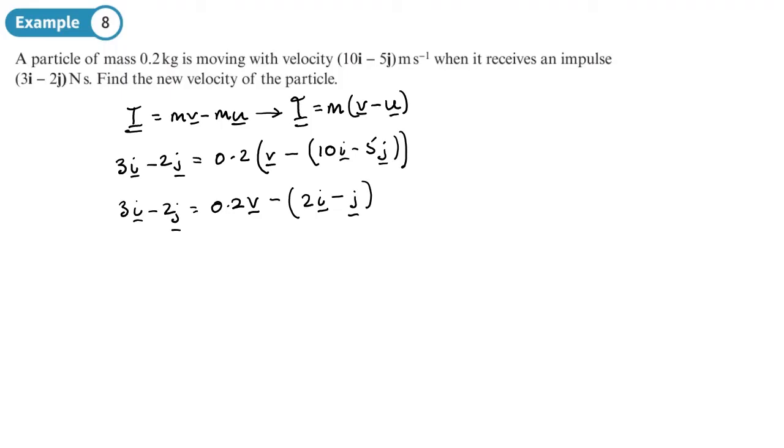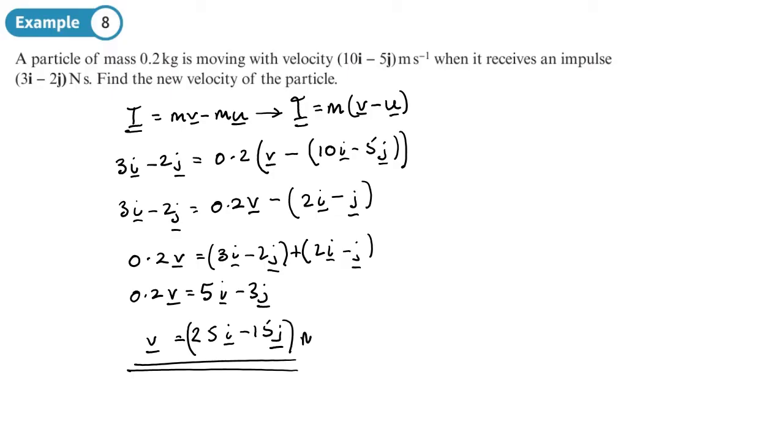The rest is now making v the subject. So 0.2v equals 3i minus 2j plus 2i minus j. So 0.2v equals, if I add the i's together I get 5i, if I put the j's together I get minus 3j. So divide both sides by 0.2, which is the same as times by 5, so I get 25i minus 15j. At this point we could work out what the speed is by doing Pythagoras and we can work out the direction by doing trigonometry. But this is all they want, the new velocity is 25i minus 15j meters per second.